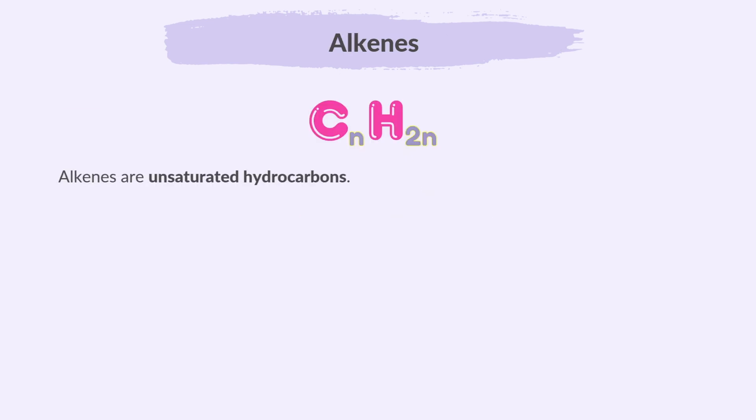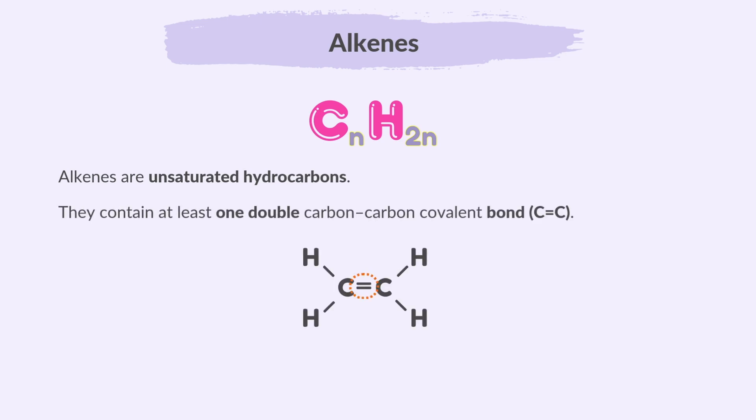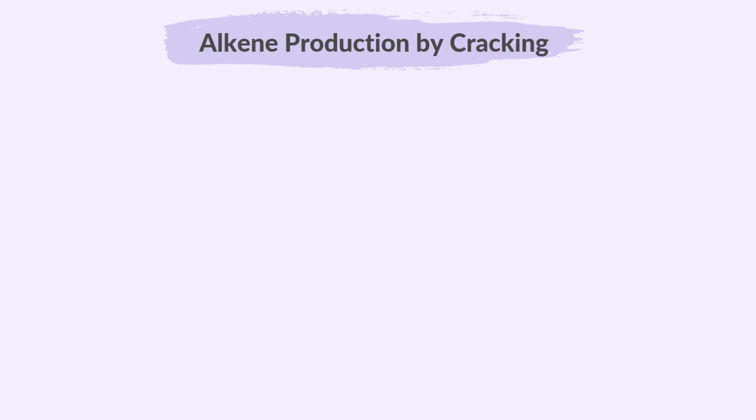Moving on to alkenes. Alkenes are unsaturated hydrocarbons, which means they contain at least one double carbon-carbon covalent bond. They are hydrocarbons, so they contain only carbon and hydrogen. This double bond makes them more reactive than alkanes, because the double bond in alkenes can break, allowing new atoms to join.